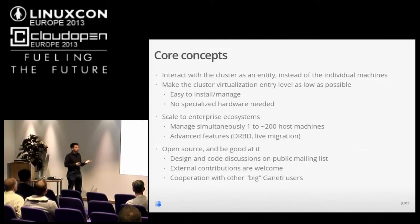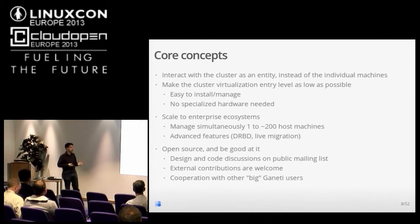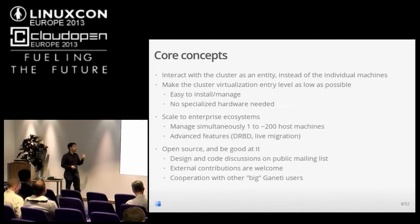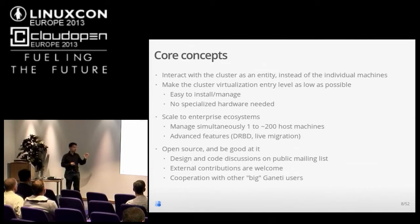Ganeti is built to scale to enterprise ecosystems. You can start with one node — not a great virtualization cluster, but you can scale up to hundreds of nodes, which is the configuration used inside Google. Ganeti is also built to be a good open source citizen: all the design and code discussions are done on the public mailing list, and you can follow the development completely from there.